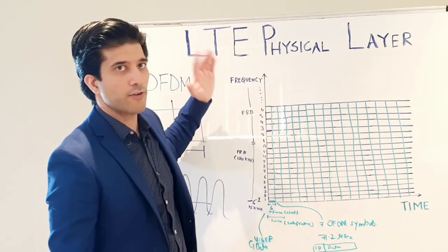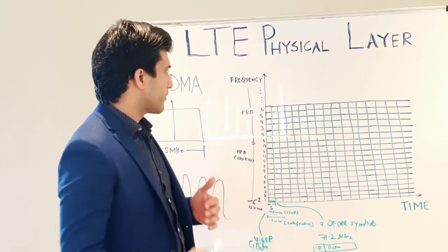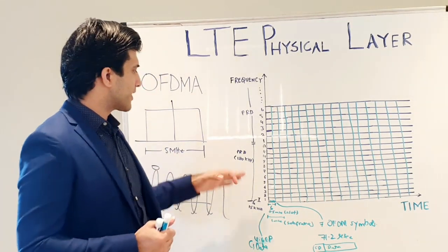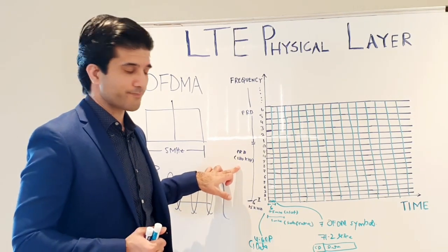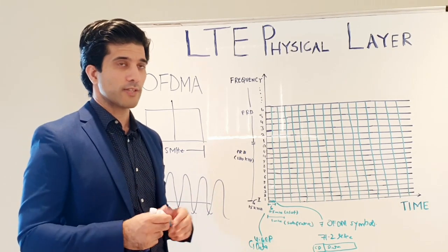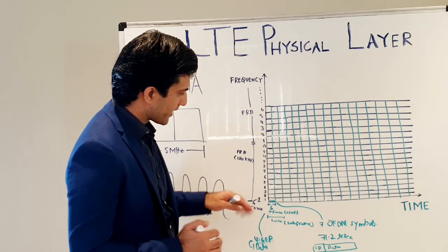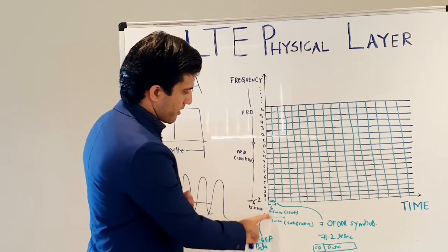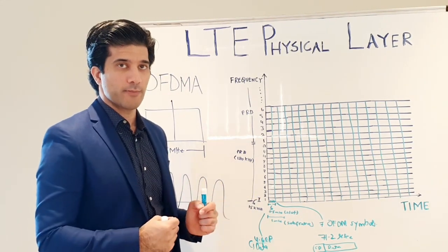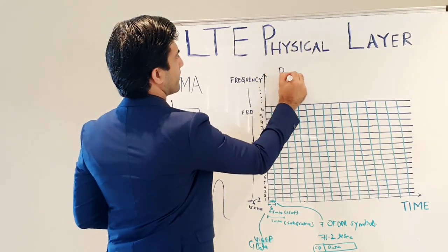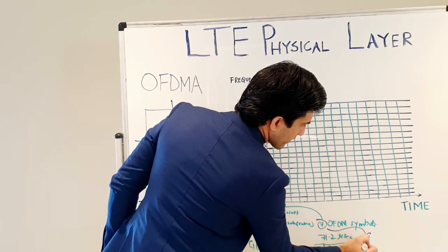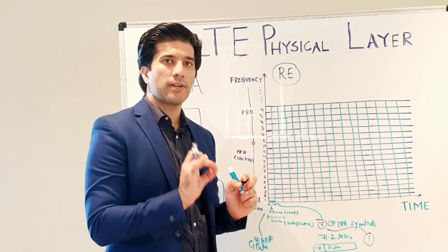The number of resource blocks is calculated by dividing your bandwidth by the resource block frequency width of 180 kilohertz. For example, 5 megahertz divided by 180 kilohertz gives the number of resource blocks. To recap: one resource block is 180 kilohertz in frequency and 0.5 milliseconds in time. Inside that 0.5 millisecond slot are 7 OFDM symbols. There is also something called a resource element, or RE.